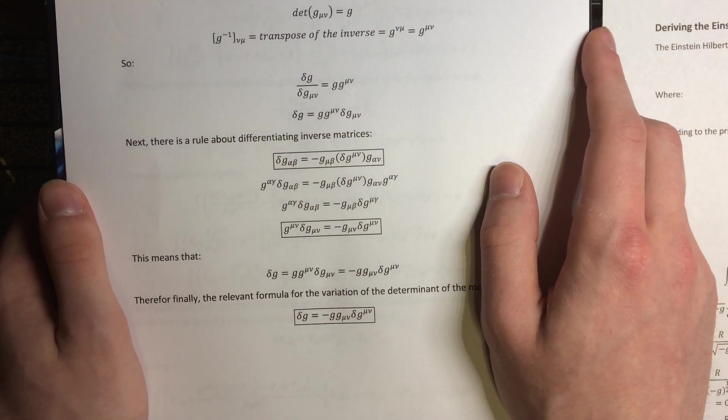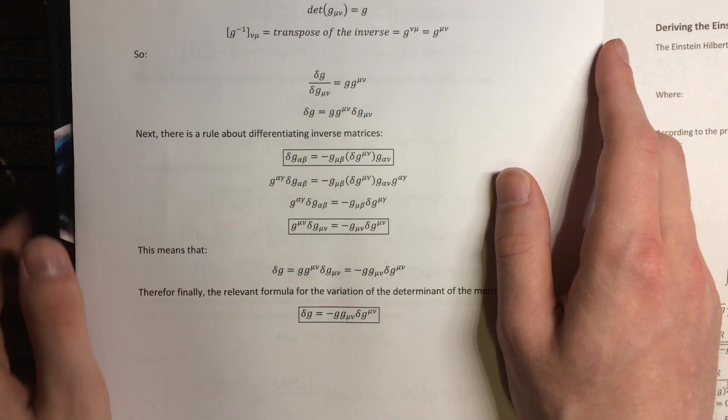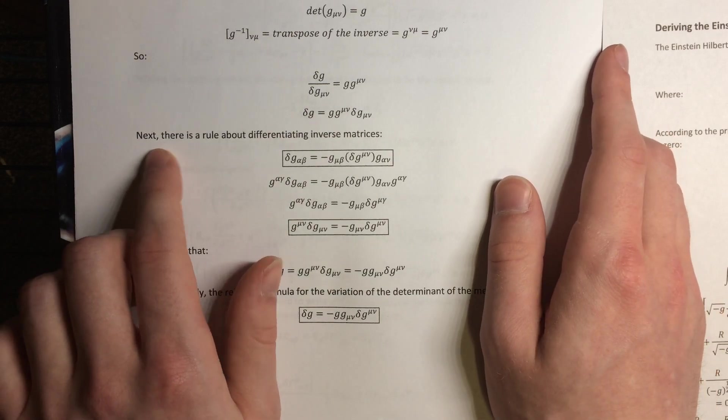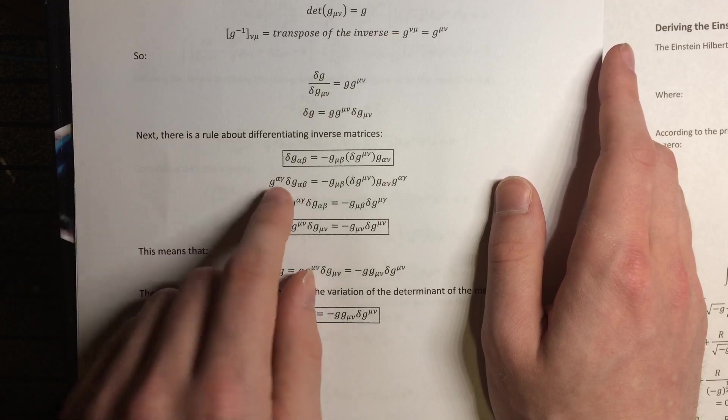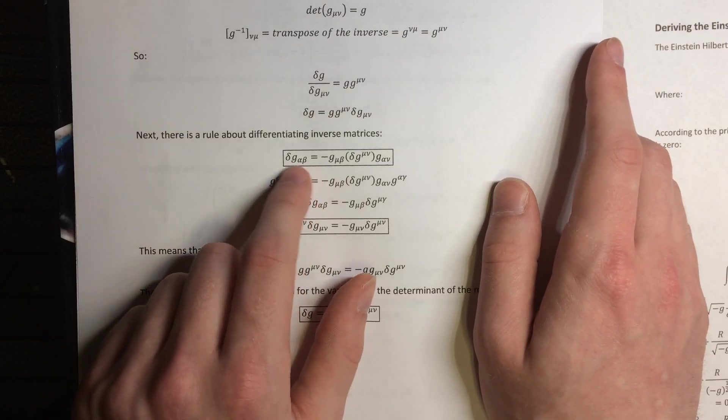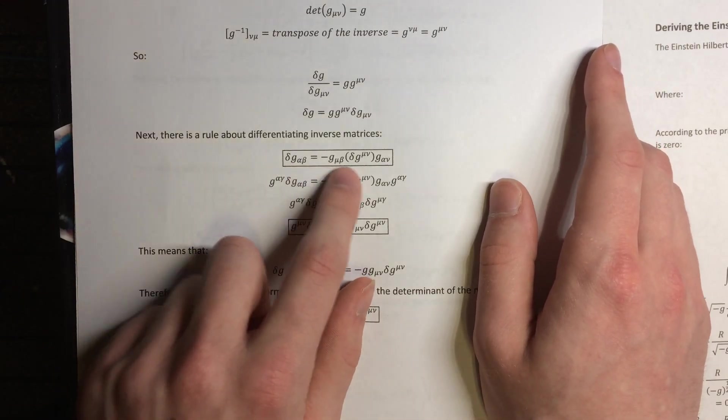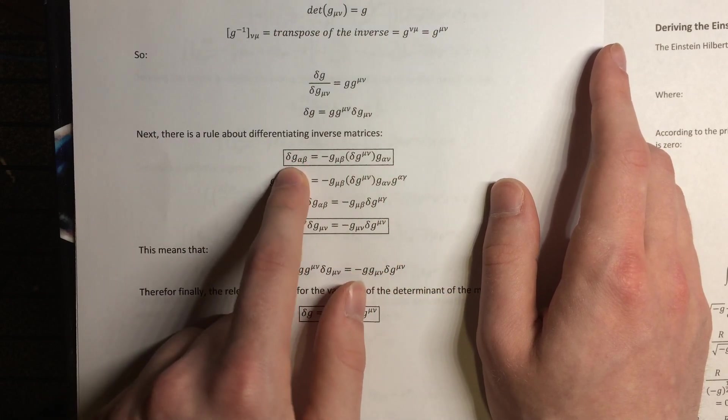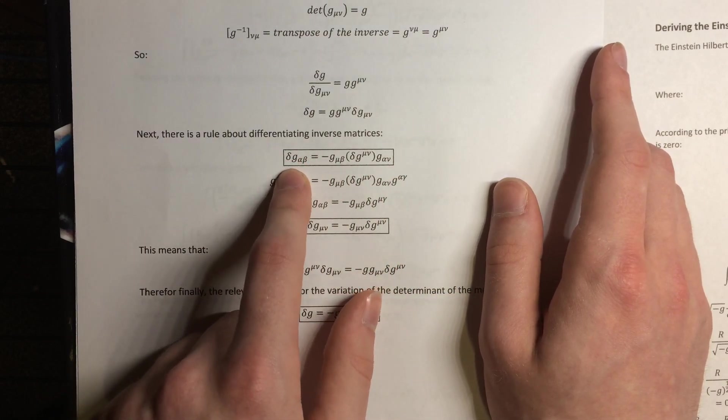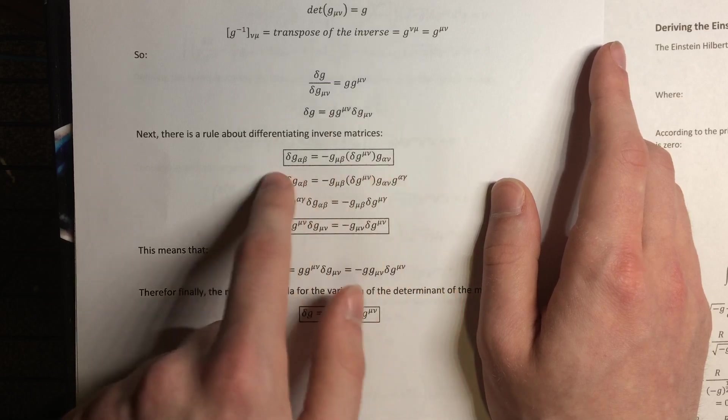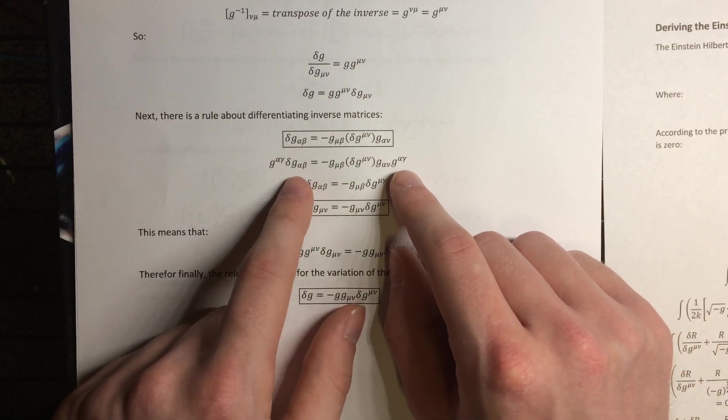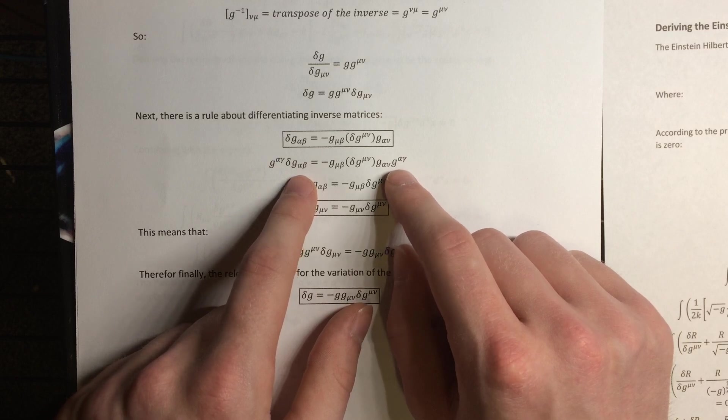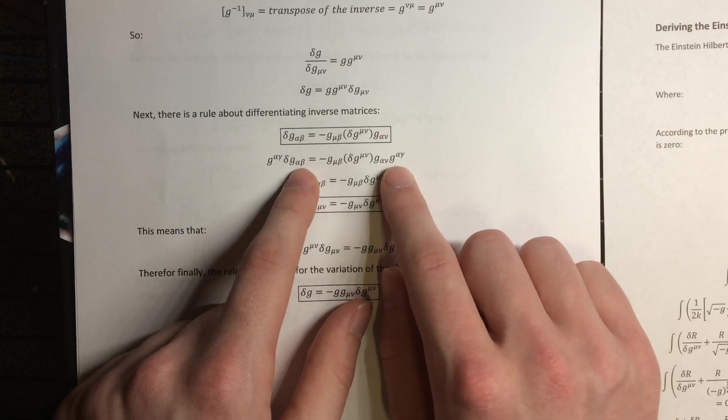The contravariant metric and the covariant metric are matrix inverses, so the identity we end up needing is the one for differentiating or taking variations, differential variations, differentials of inverse matrices. This is the answer, so the variation of a matrix in terms of the variation of its inverse is this. It's given by this formula. So now, it's useful then to contract both sides with a factor of the contravariant metric.